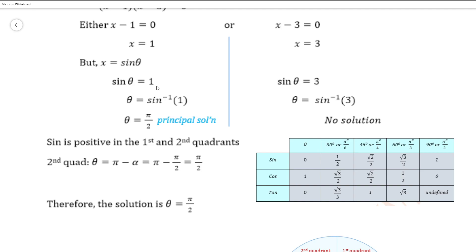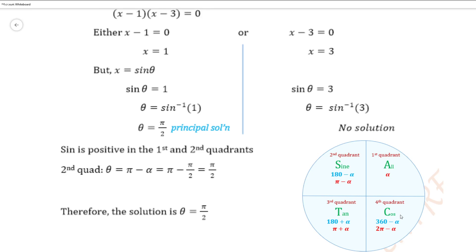Since sine theta equals 1, which is a positive number, the value of theta obtained is our first quadrant solution or principal solution. Sine is positive in the first and second quadrants, as seen on the diagram. In the first quadrant, sine, cos, and tan are all positive. In the second quadrant, sine alone is positive. In the third quadrant, tan alone is positive. In the fourth quadrant, cos alone is positive. So sine is positive in the first and second quadrants.